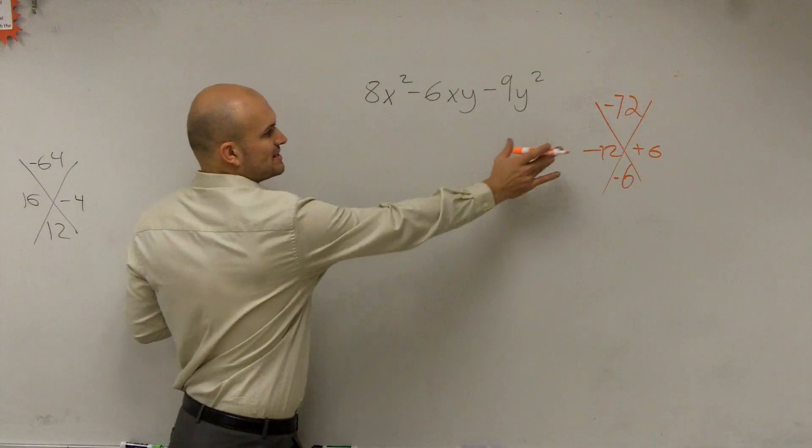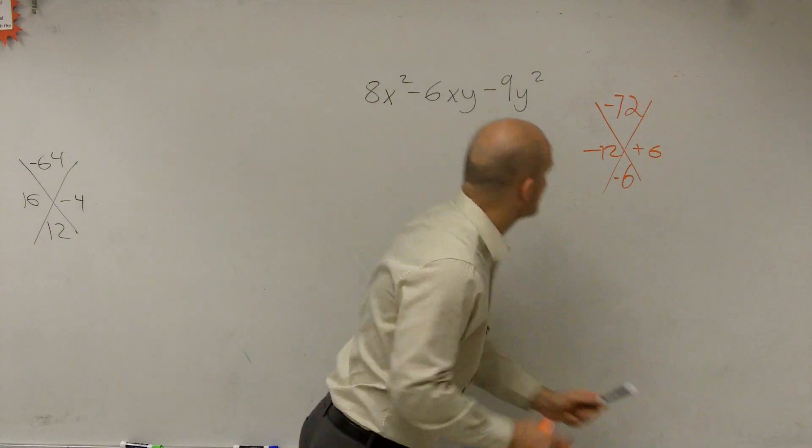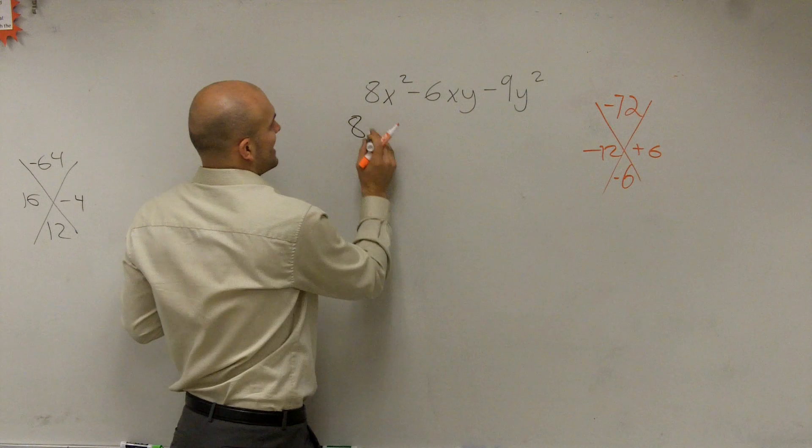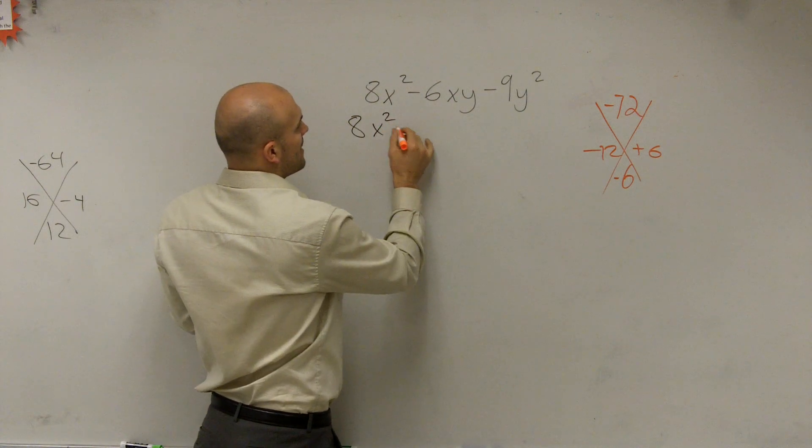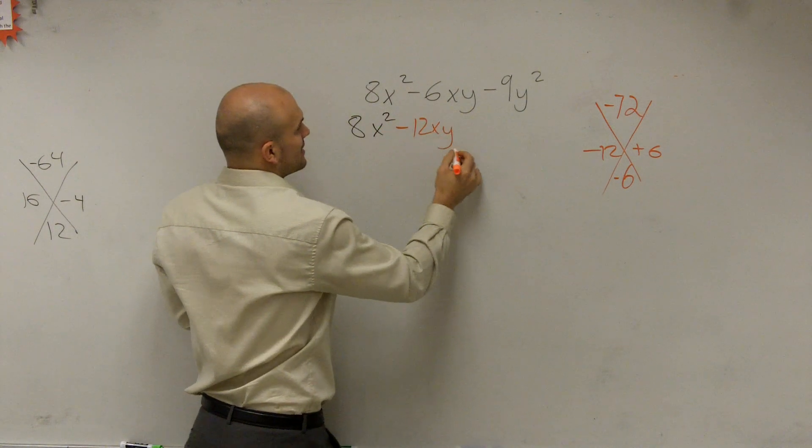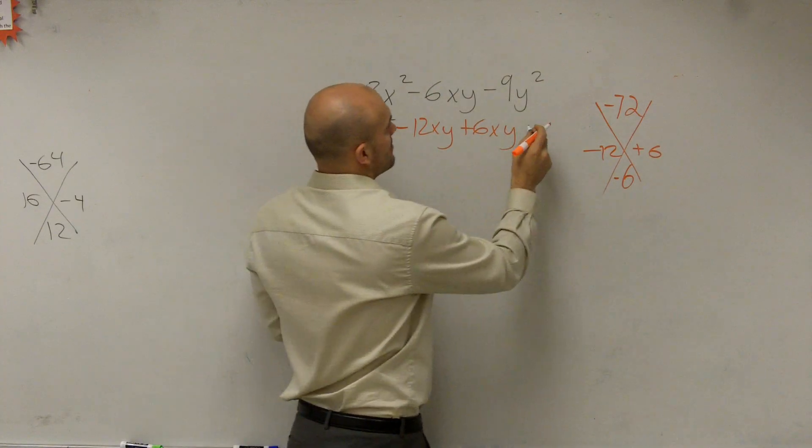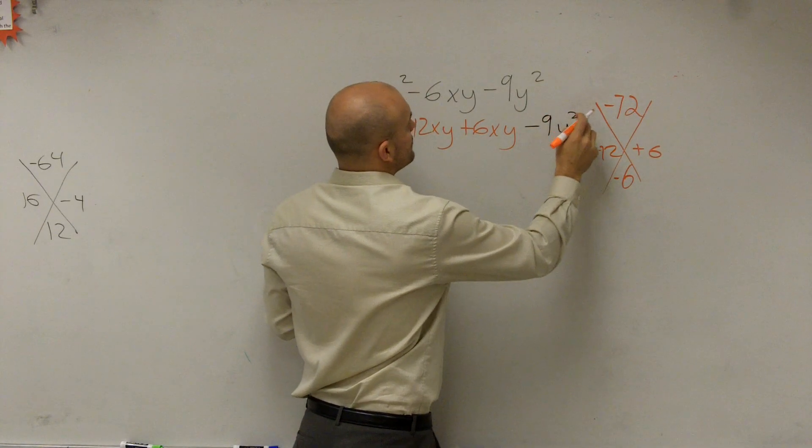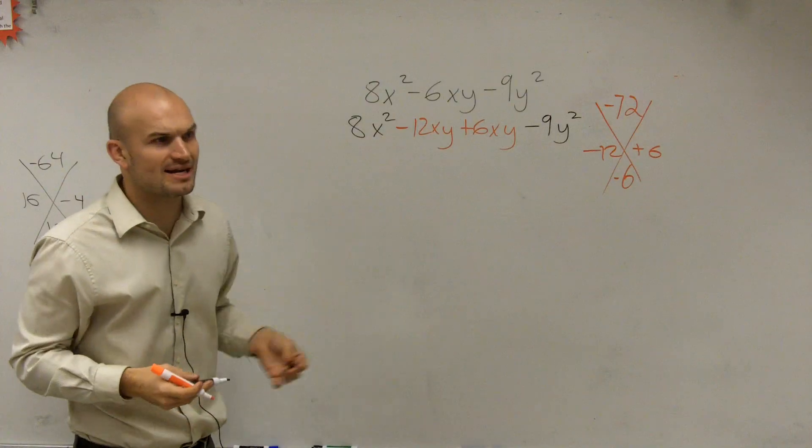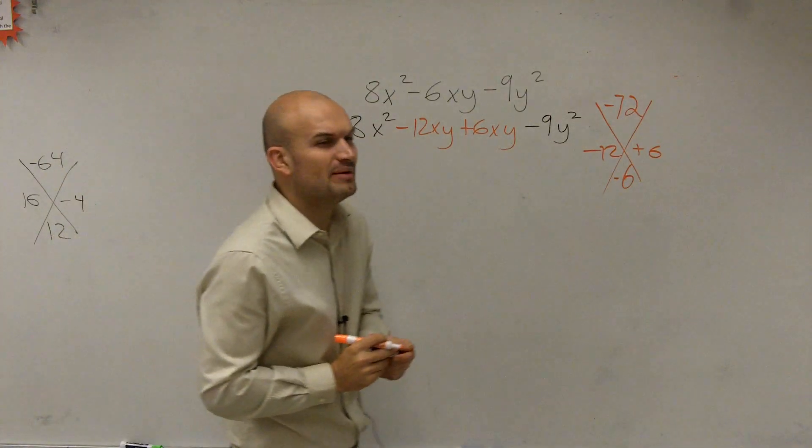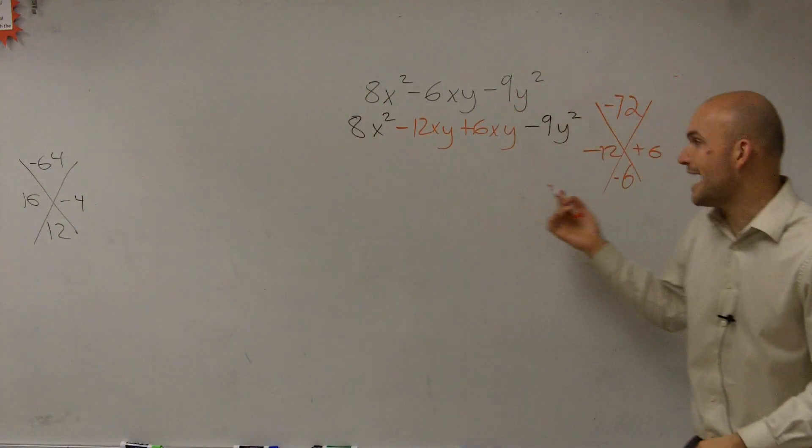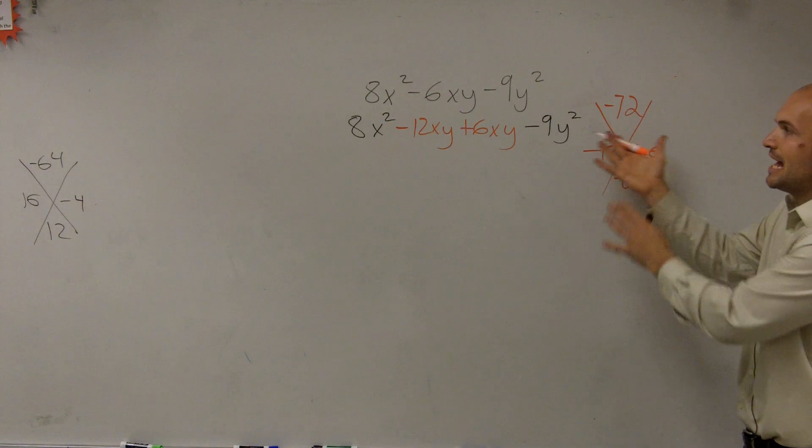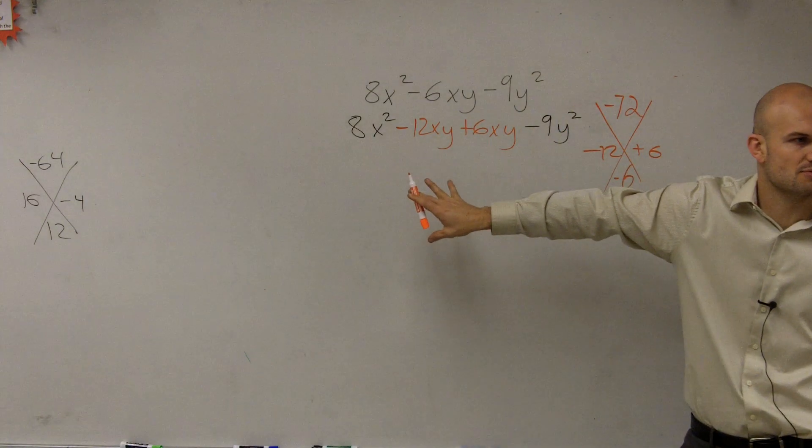So now what we do is we take those two terms, and we write them into our problem. So we say 8x squared minus 12xy plus 6xy minus 9y squared. Now, why did I throw xys with it? Well, the reason being is what I'm doing is I just created this to help me determine what my new middle terms would be.